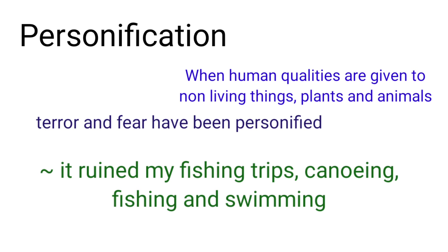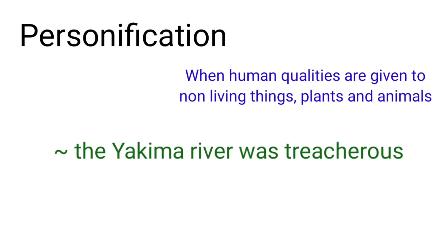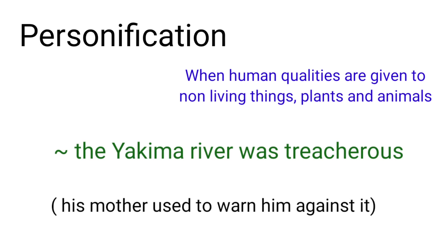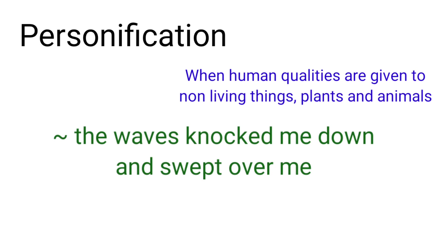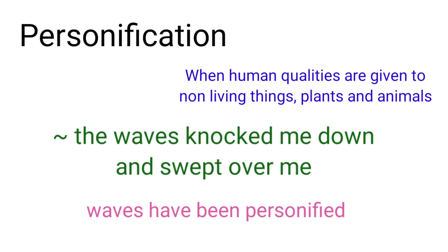There are other examples too. 'The Yakima river was treacherous' — here the river is described as treacherous, meaning disloyal or untrustworthy, which are human characteristics attributed to the river. Another example: 'The waves knocked me down and swept over me.' This was when he was three or four years old and had gone to the California beach with his father, where huge waves knocked him down and pushed him under.